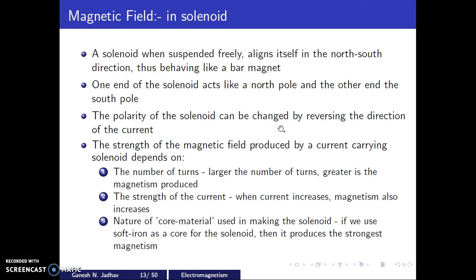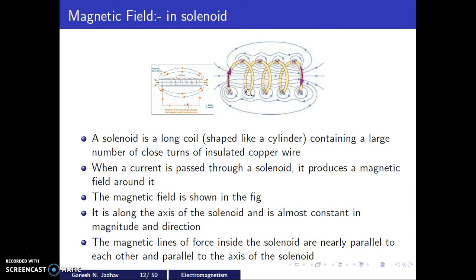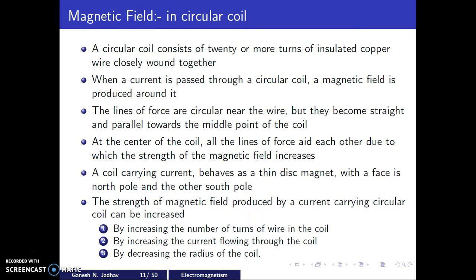The coil carrying current behaves as a thin disc magnet, with one face as the north pole and the other as the south pole. The strength of the magnetic field produced by a circular coil can be increased by increasing the number of turns, by increasing the current flowing through the coil, or by decreasing the radius of the coil. A smaller radius produces a stronger magnetic field inside.